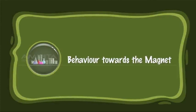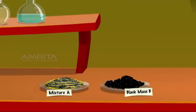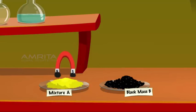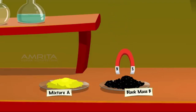Behaviour towards a magnet: place small quantities of mixture A and black mass B in separate watch glasses. Show a magnet over mixture A — iron filings cling to the magnet since iron retains its properties. Show the magnet over black mass B — no particles attach to the magnet because iron loses its magnetic properties on forming a compound.